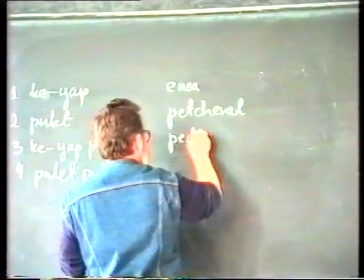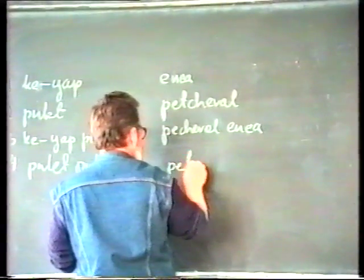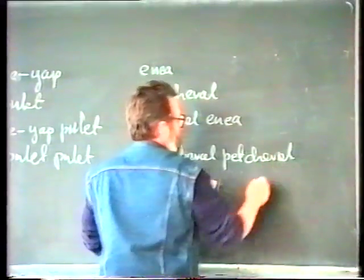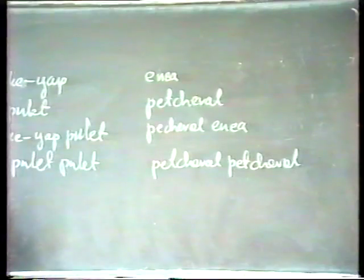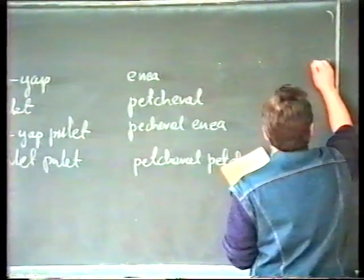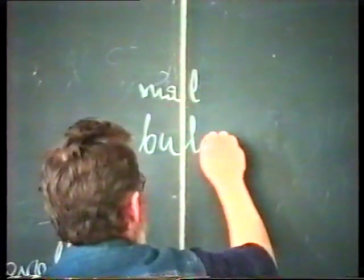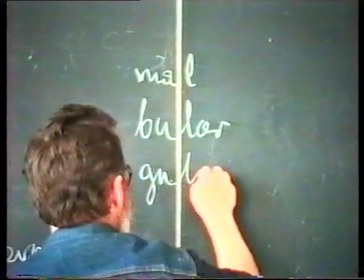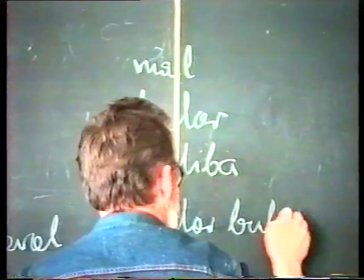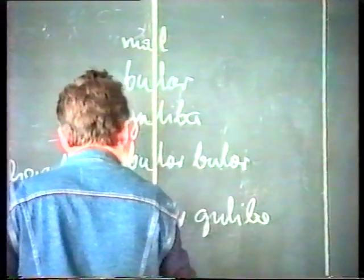Ale jedno z plemion aborygeńskich z kolei liczy tak. Przykład jeden, plemię Kamilaroi. Znowu aborygeńskie plemię, które ma bardziej skomplikowane te licze wyniki. Mianowicie Mal, Gular, Guliwa. Bular, Gular. Bular, Guliwa. Oraz Guliwa, Guliwa.